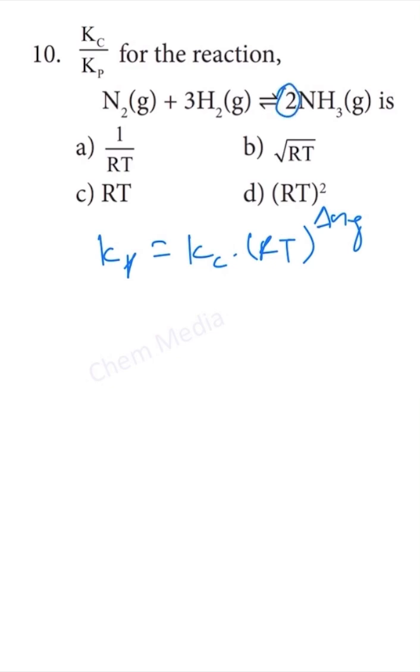Here we have two moles on the product side, and on the reactant side we have 3 plus 1, so 4 moles. Therefore, delta Ng equals 2 minus (3 plus 1), which equals minus 2.